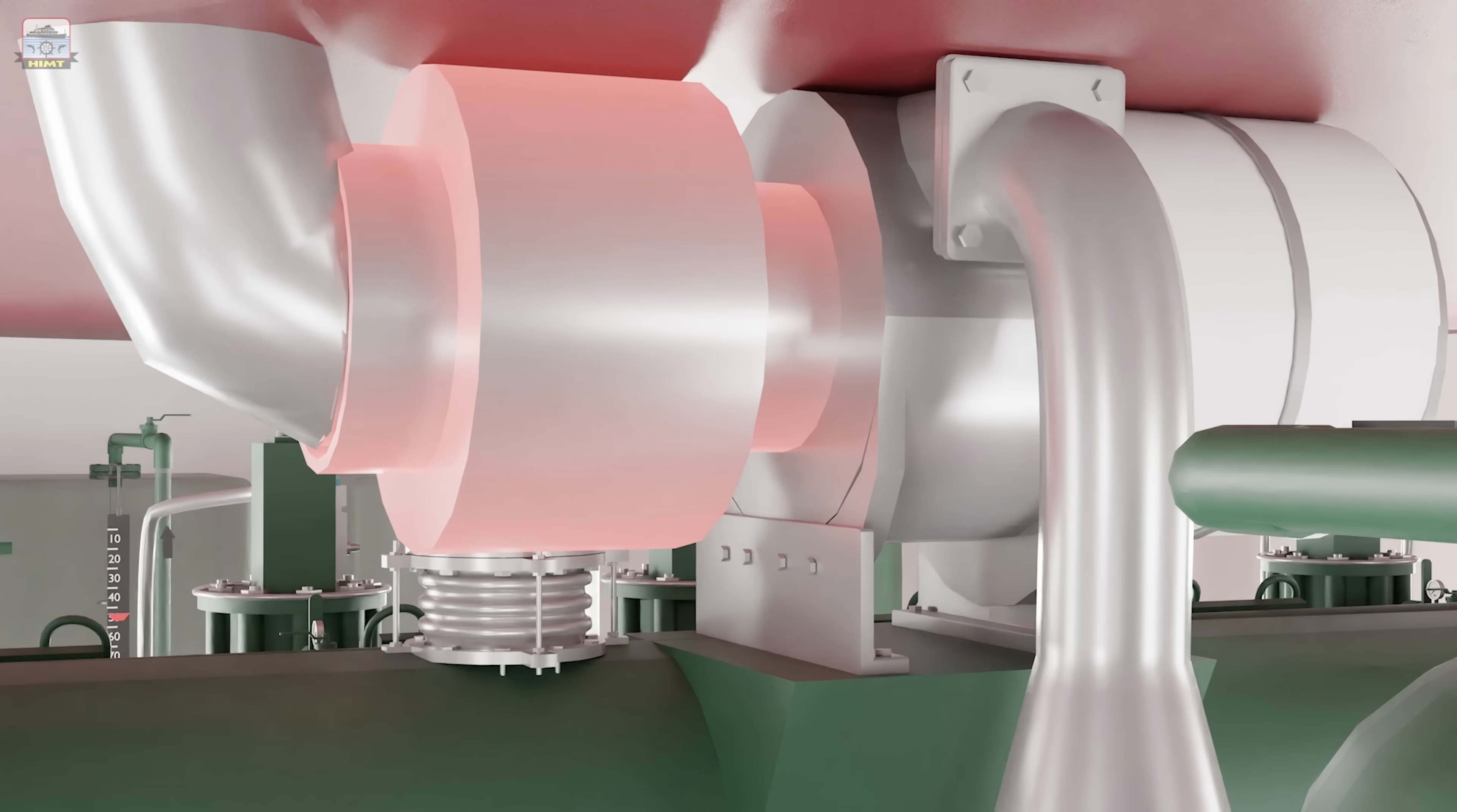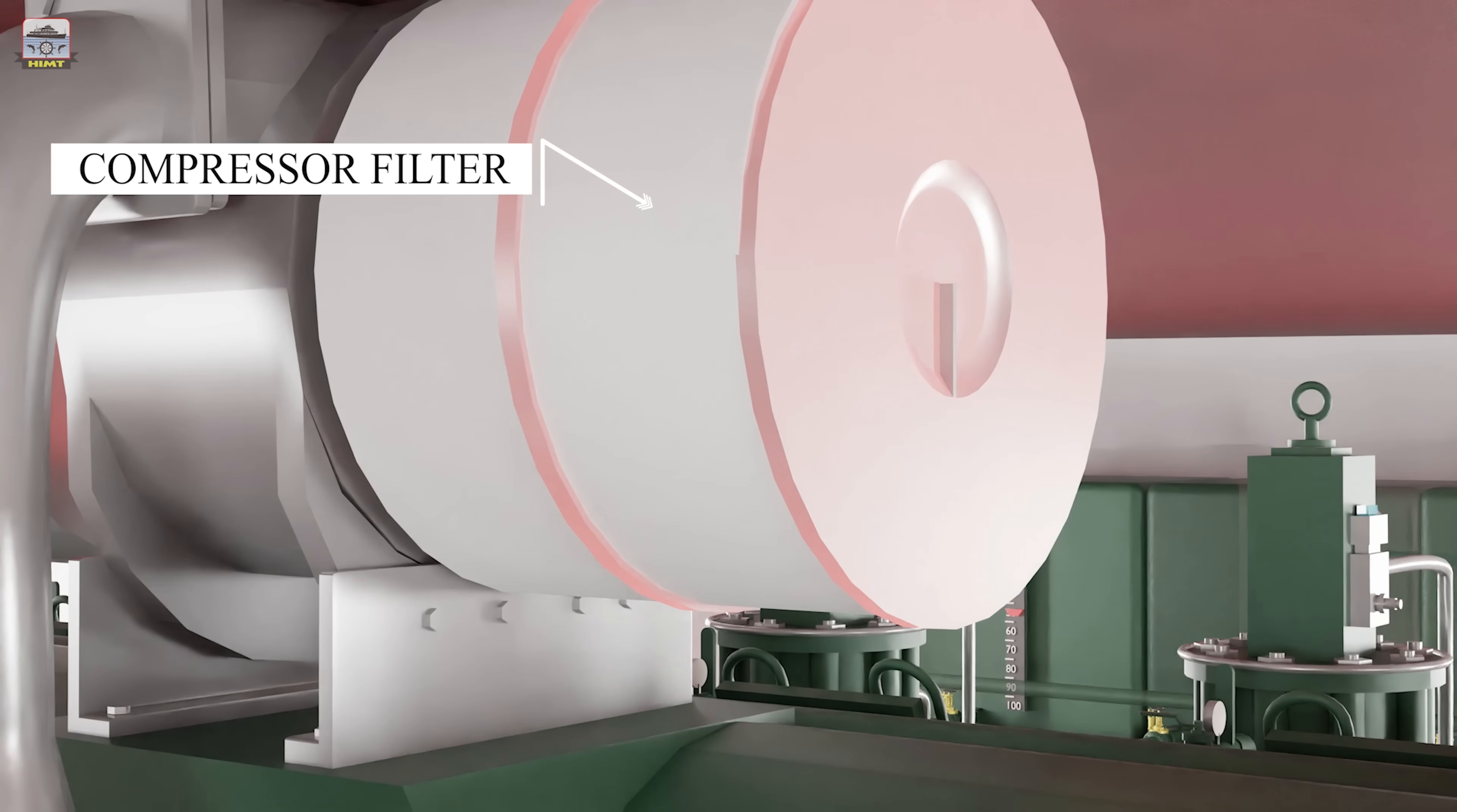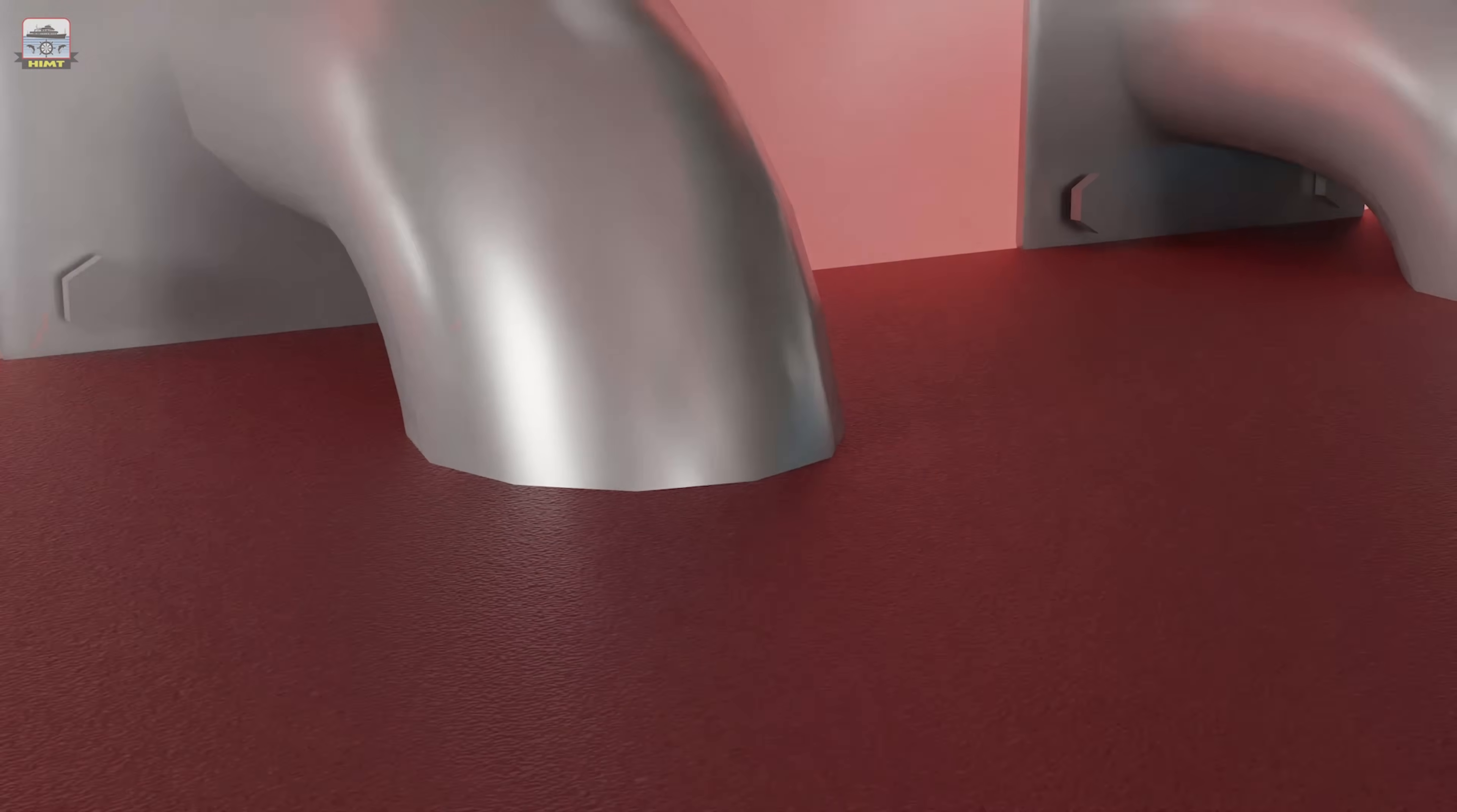The turbine wheel is rotated by the energy of the exhaust gas taken from the exhaust manifold. A compressor impeller fitted on the other side of the turbine shaft draws air from the engine room through a filter, compresses it, and sends it to the air cooler. After cooling, the air enters the scavenge manifold to enter the cylinder through the scavenge ports.